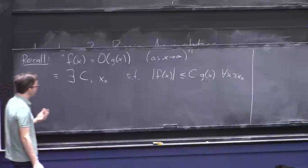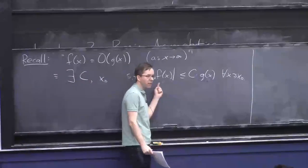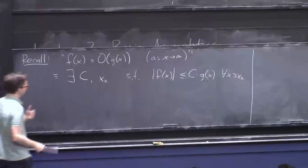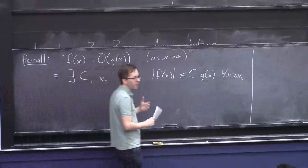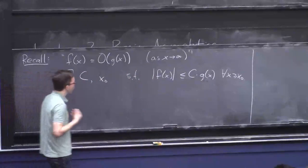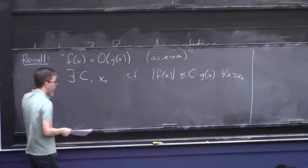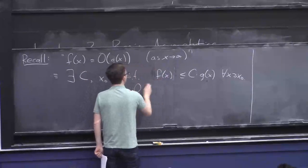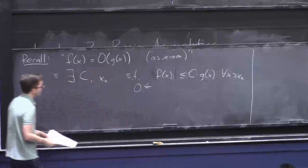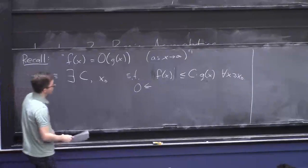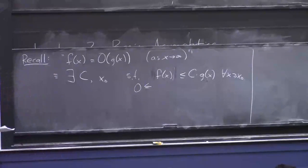Most mathematicians like to put an absolute value in here, allowing for the possibility that f(x) is a negative function. It doesn't usually come up in theoretical computer science because our functions are often counting things or running times, which are inherently non-negative. I personally prefer a definition that simply says f(x) is, for large enough x, not negative, and at most C times g(x).